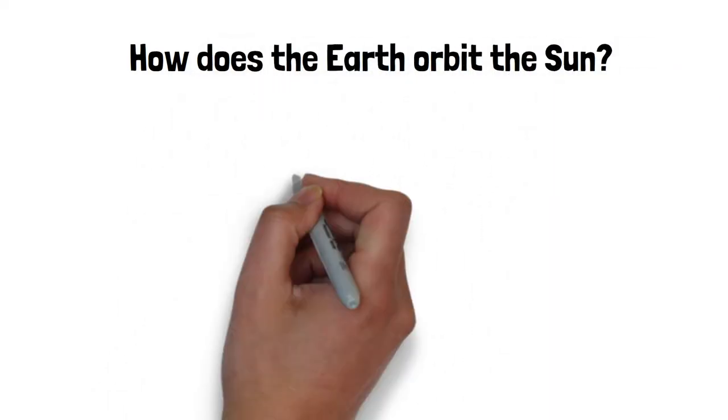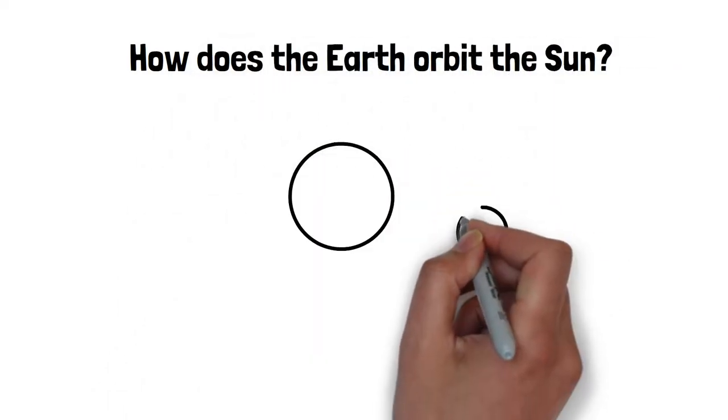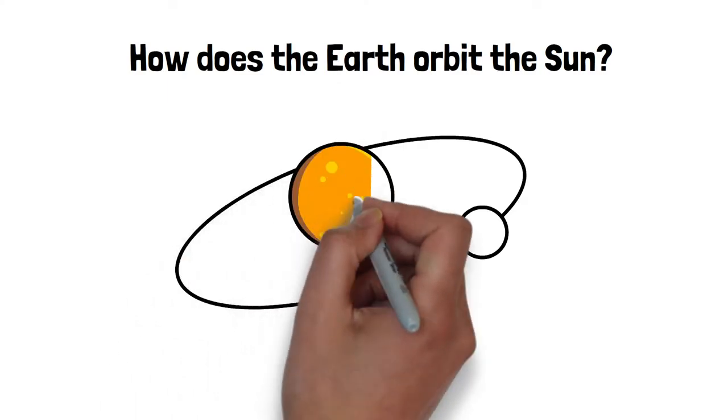How does the Earth orbit the Sun? We often think about the Earth orbiting the Sun in an elliptical orbit as shown here.